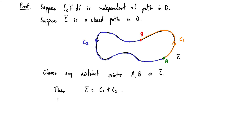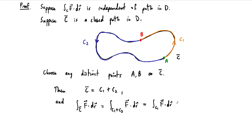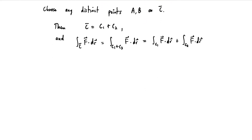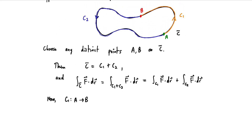By the properties of path integrals, the integral along c hat of f dot dr equals the integral along c1 plus c2 of f dot dr. Since path integrals are additive over paths, this becomes the integral along c1 of f dot dr plus the integral along c2 of f dot dr. Now, c1 takes us from point a to point b, but c2 goes from b back to a.